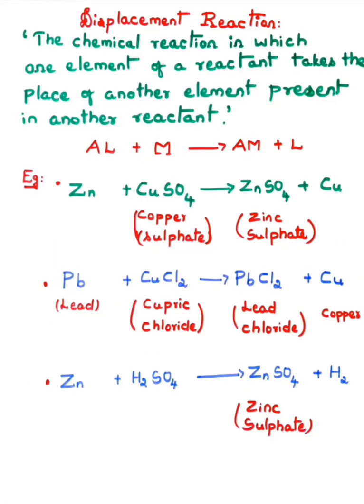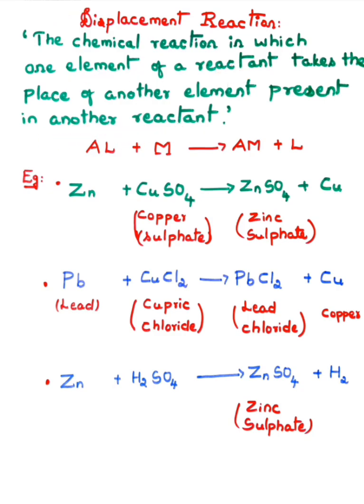Next is displacement reaction. In this type, one element of a reactant takes the place of another element present in another reactant. Here element L displaces from one compound, and A combines with M, leaving L free on the other side. Let's see a few examples to understand this better.